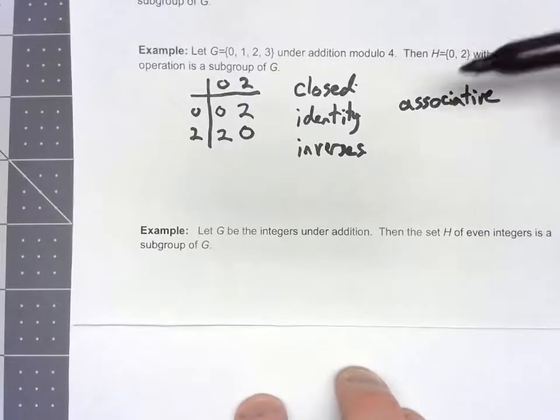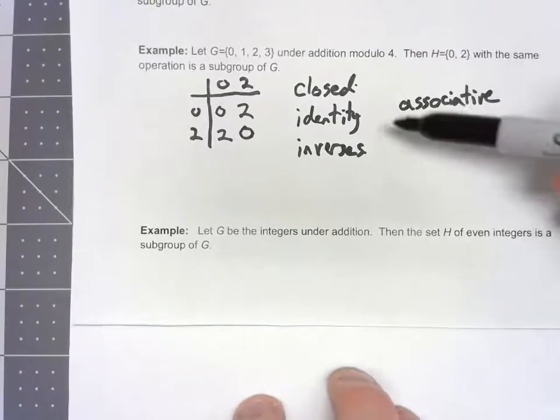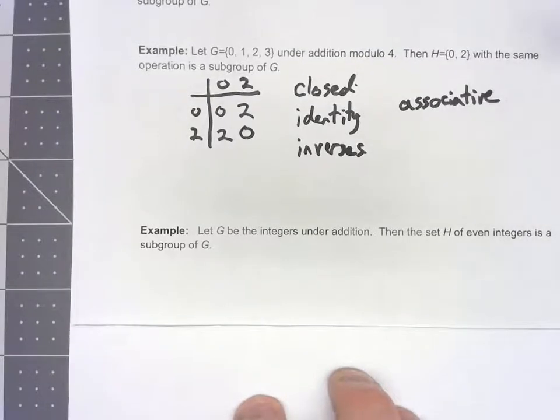Is it closed? Well, I'm not going to do a big proof, but if you add two even integers, you get an even integer. Does it have an identity? Yes. 0 is an even integer. We know that adding 0 doesn't change what we add it to.